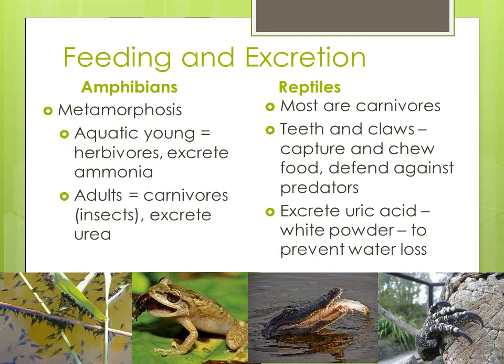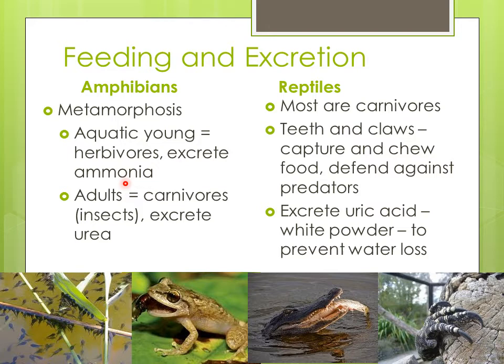For feeding and excretion — excretion being getting rid of wastes — amphibians undergo a metamorphosis, the change between their two life forms, similar to how butterflies start as a larva and become a butterfly. The young amphibians are aquatic, like tadpoles, and are herbivores. Since the young are in water, they can excrete ammonia, which is toxic, but they don't let it build up — they get rid of it right away because they don't need to conserve water. Adult amphibians are carnivores, eating things like insects or other small animals.